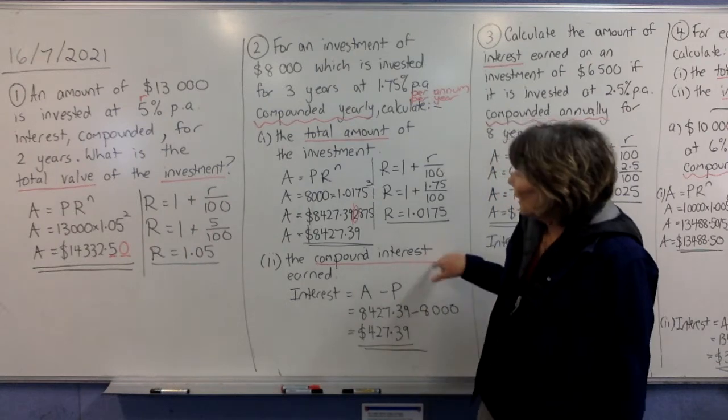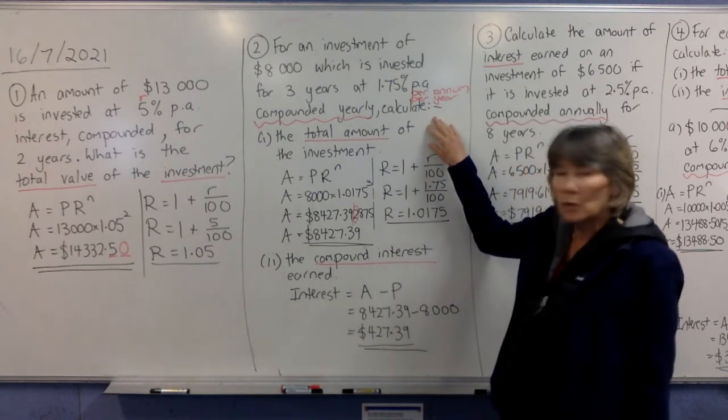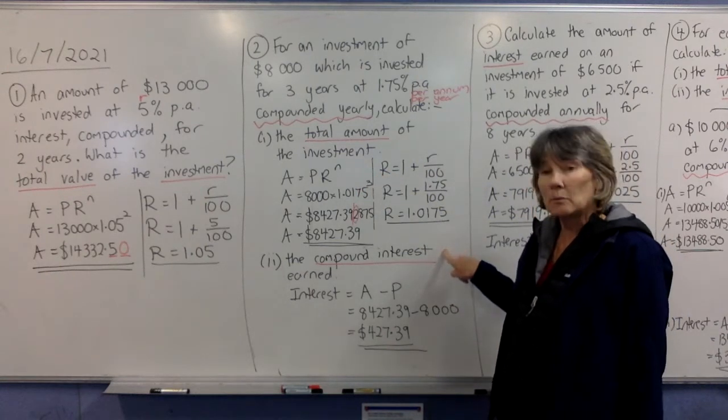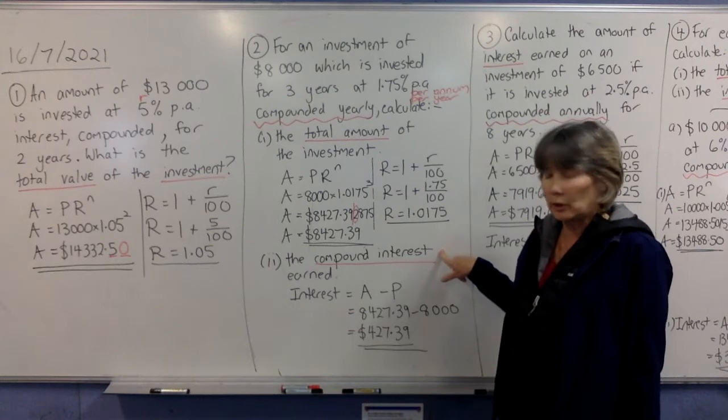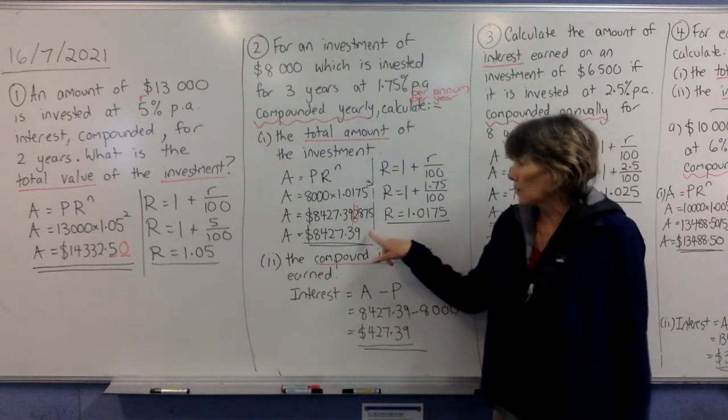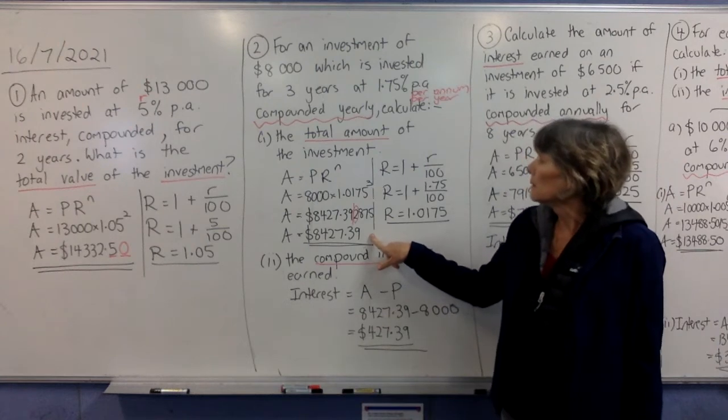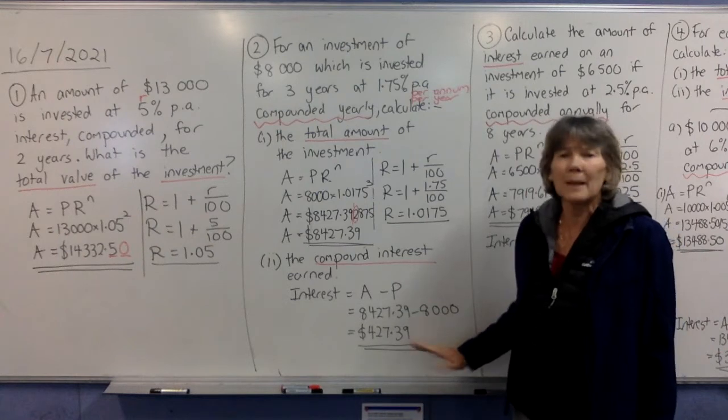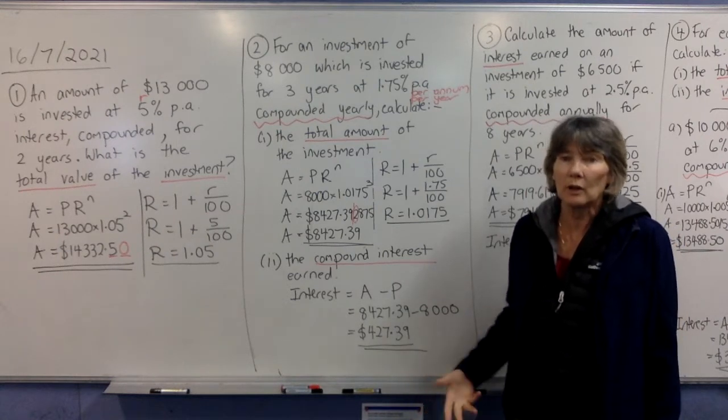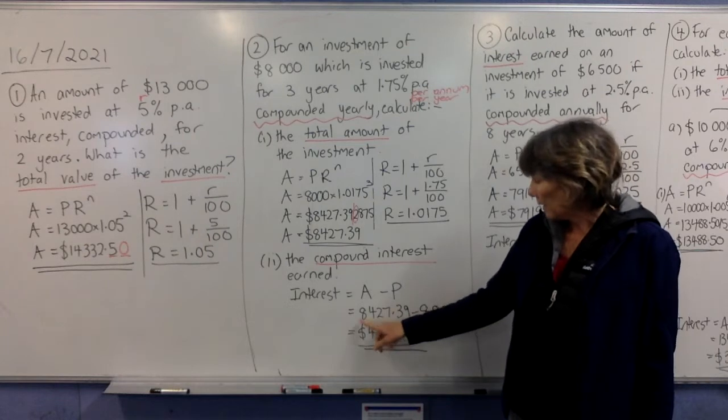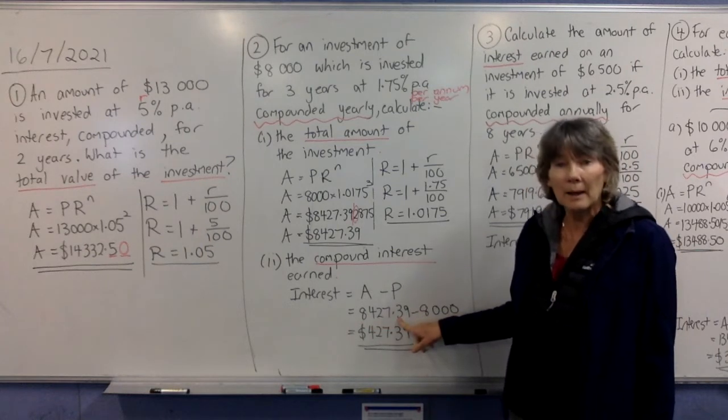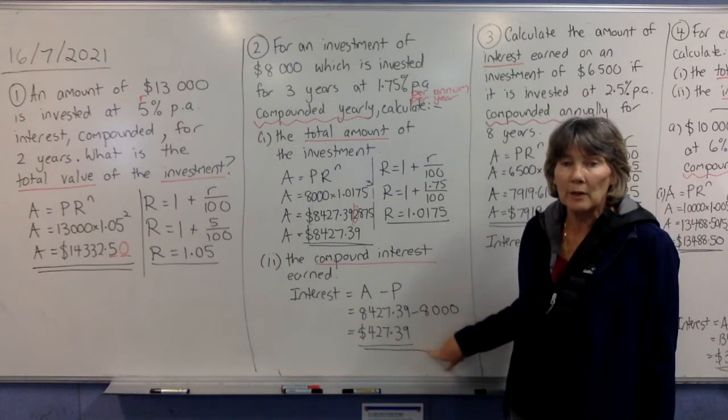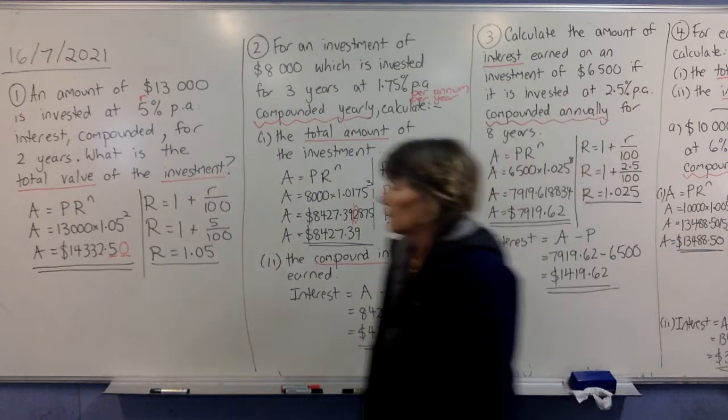Now the second part of this, that first part was asking for the total amount of the investment, which is what that formula finds. The second part wants you to find the interest you earned. So the interest you earned was the final value of the investment minus what it was to start with, $8,000. So that formula should make sense. It shouldn't be anything that you're having to learn off by heart. It should just make sense. It now looks like that in my account. It used to look like that. Whatever the difference is, it's the extra money you earned. That's your interest.